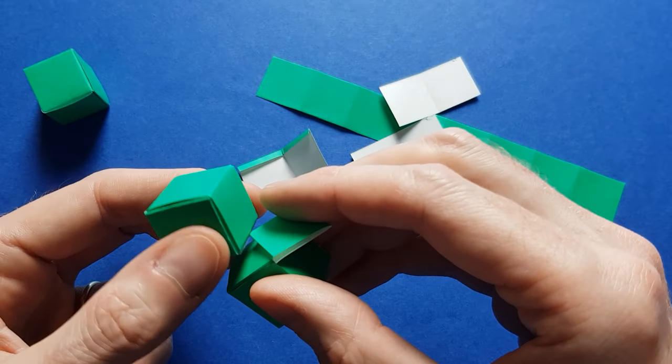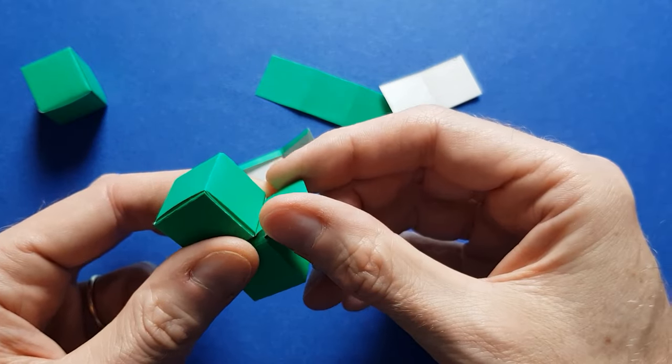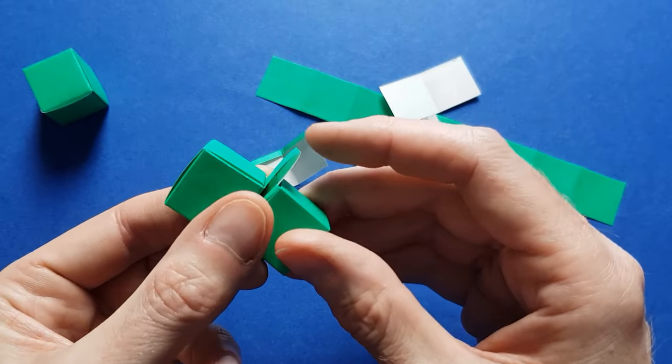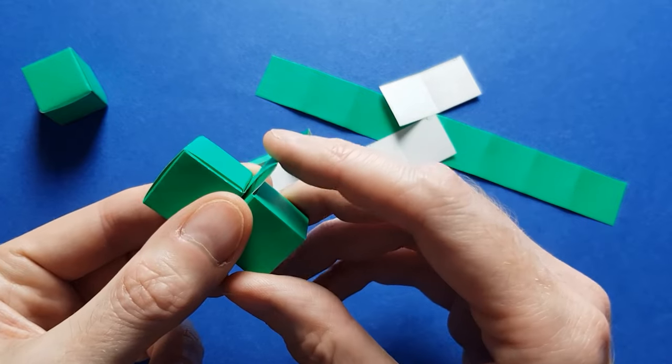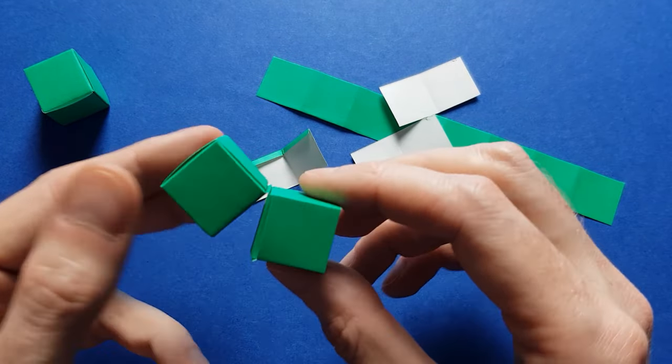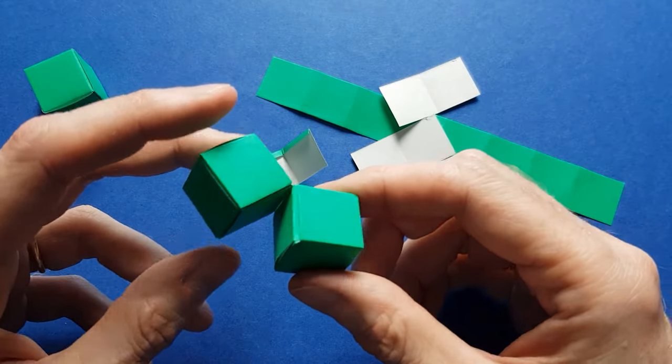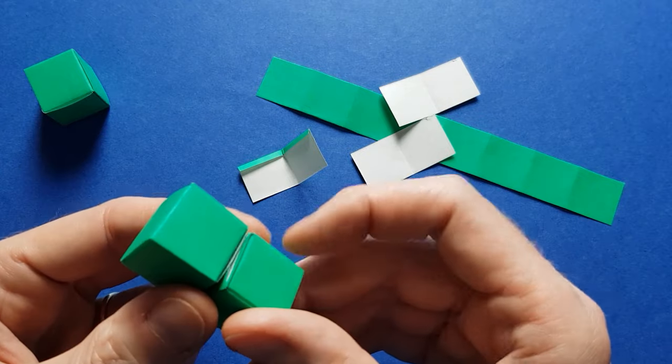And then insert it in the other cube. And then once it's like this, you can just push the clip inside. And so this is going to lock the cubes on one side. And then we can do the same thing on the other side.